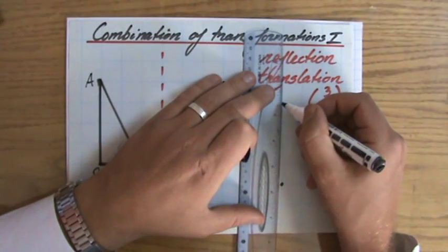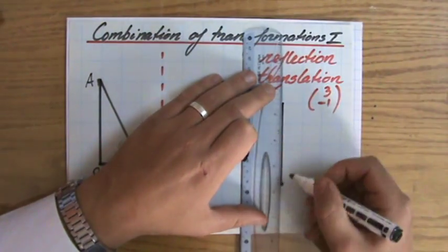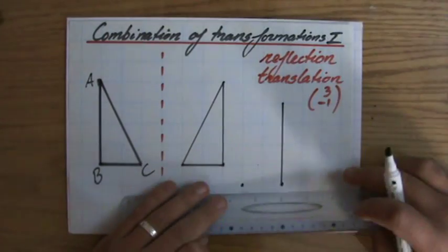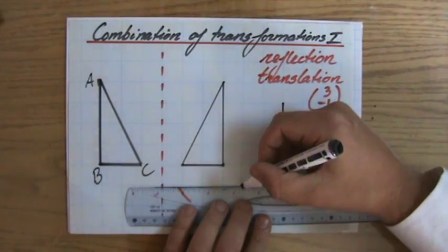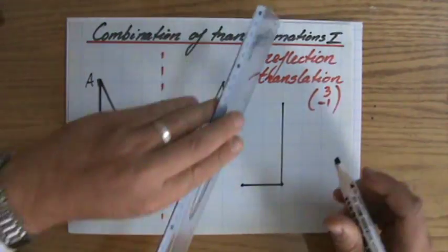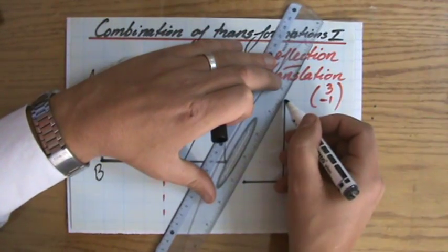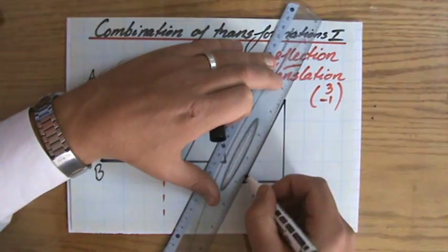Now I've done a reflection and a translation, but perhaps it will say in your question, a translation and then a rotation, or perhaps you have to enlarge it first and then reflect it into some sort of mirror line. All sorts of possibilities of combinations of transformations.